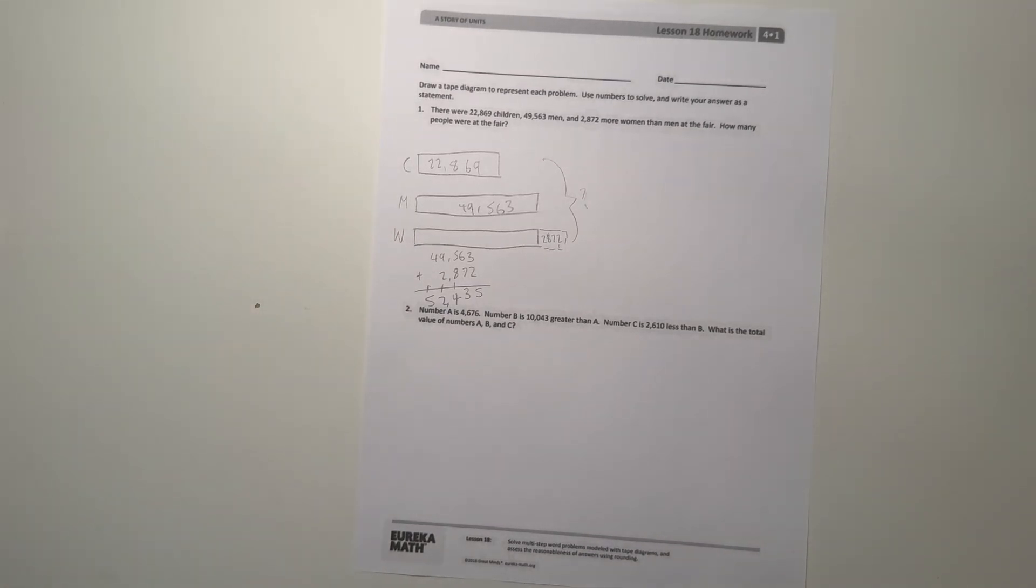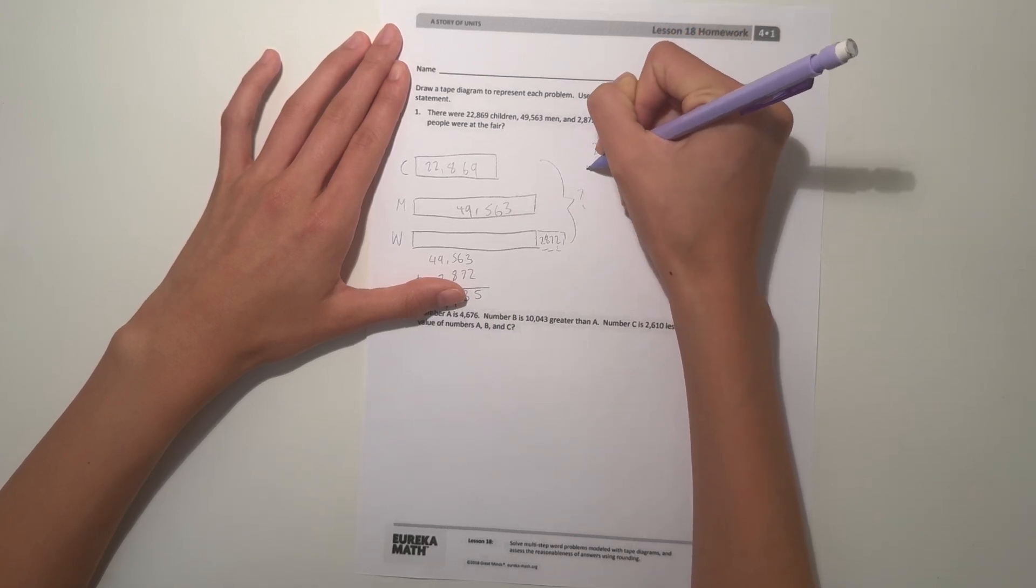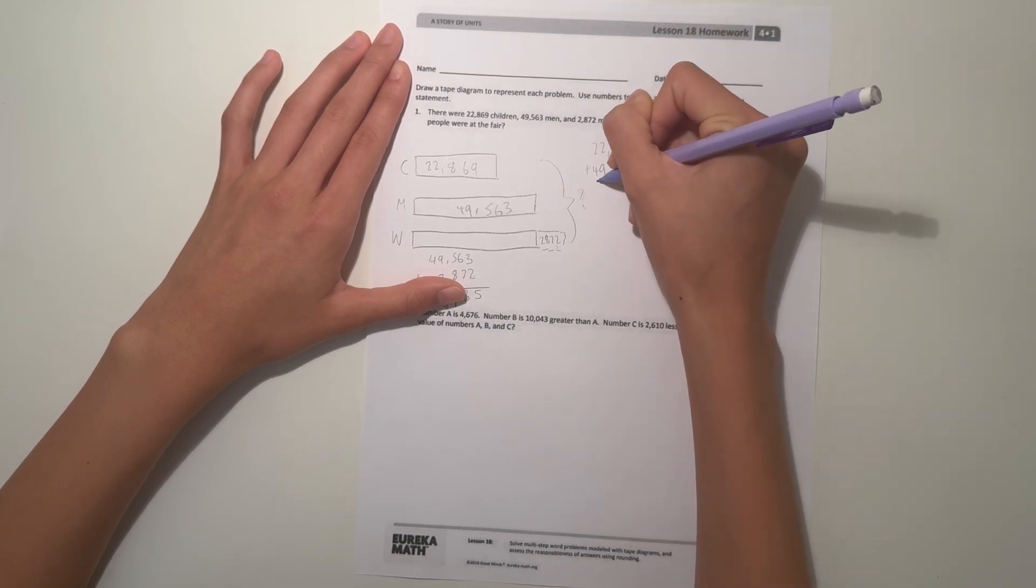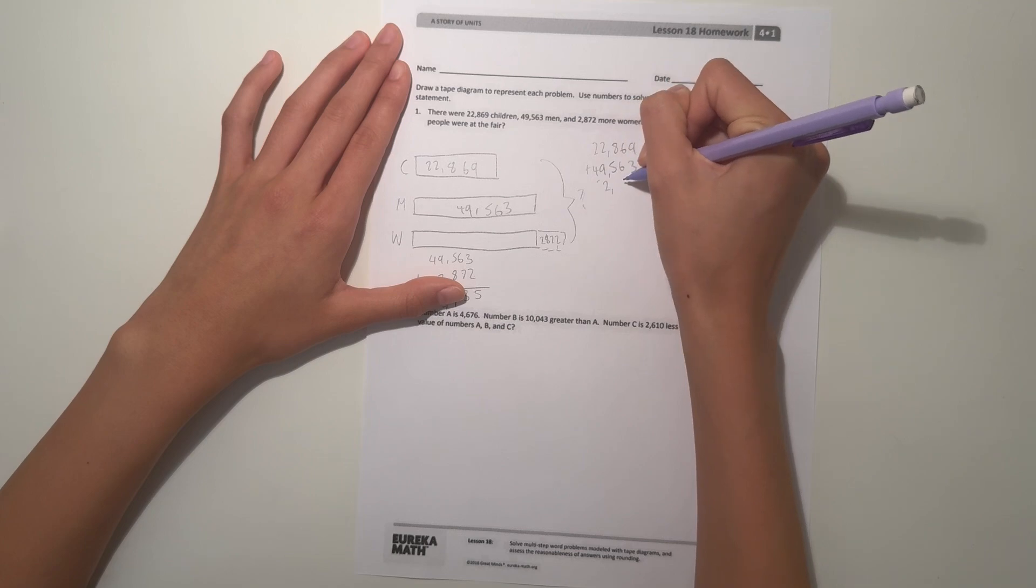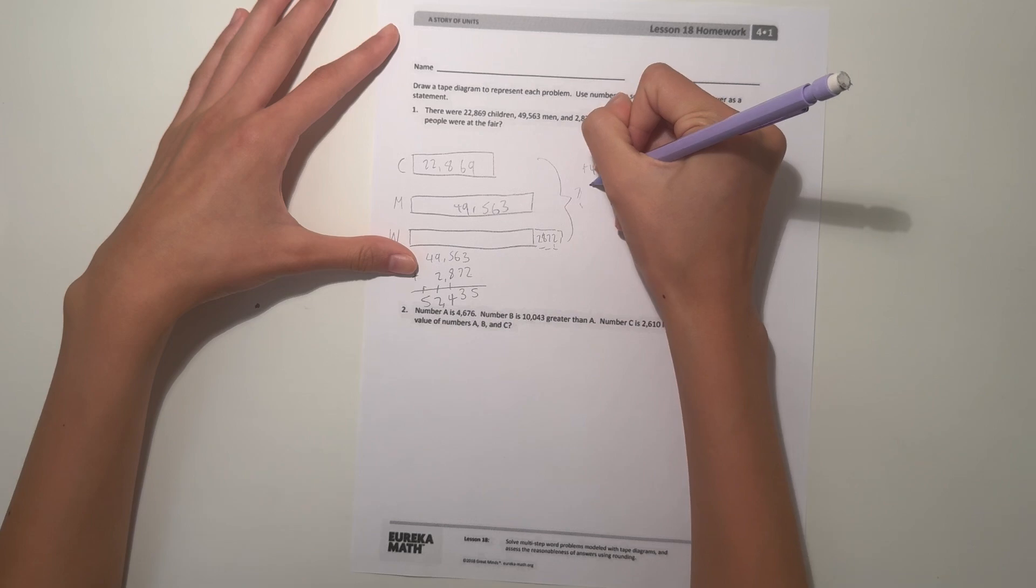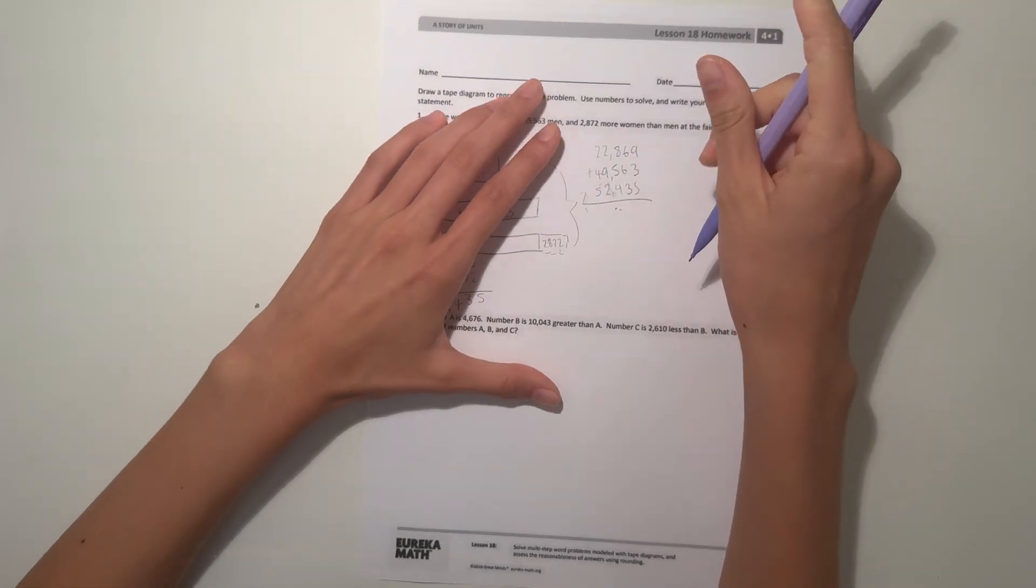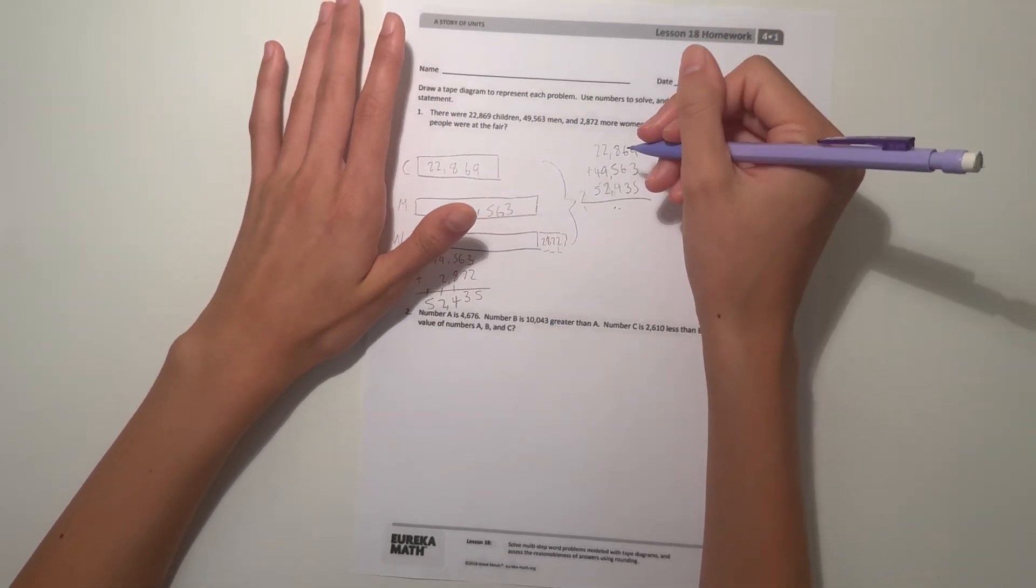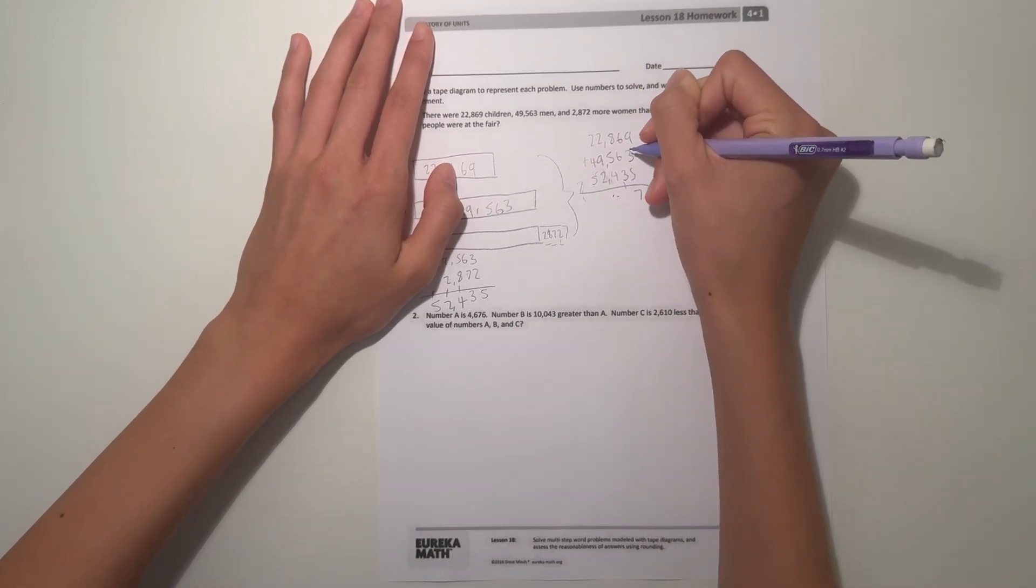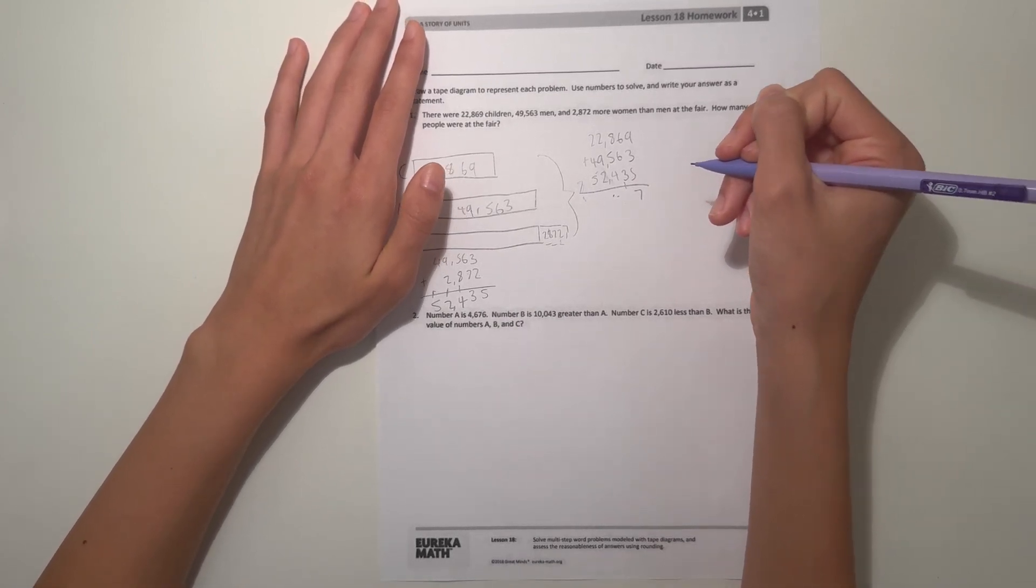If we're trying to figure out how many people are at the fair altogether, let's add 22,869 children plus 49,563 men and 52,435 women. Let's see: 9 plus 3 is 12 plus 5 is 17, 6 plus 6 is 12 plus 3 is 15 plus 1 is 16.